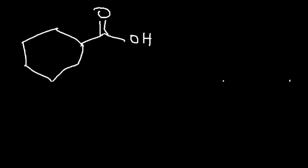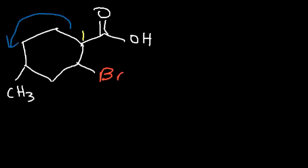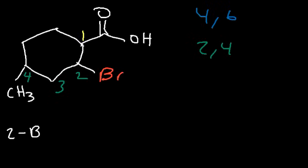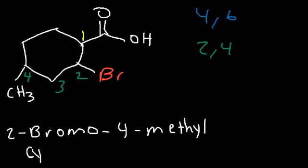What if there are substituents attached to the ring? Let's add a bromine atom and a methyl group. Carbon 1 is automatically associated with the functional group of highest priority. We then decide whether to count clockwise or counterclockwise. Counting counterclockwise gives substituents at 4 and 6; counting clockwise gives 2 and 4, which is lower — so we go clockwise. Putting substituents in alphabetical order — B before M — this is called 2-bromo-4-methylcyclohexane carboxylic acid.